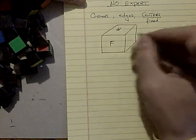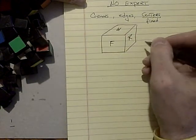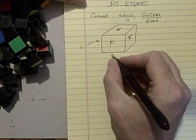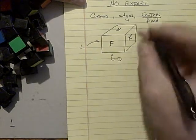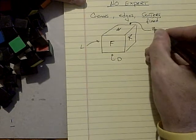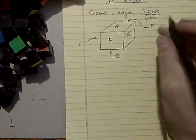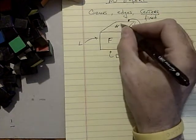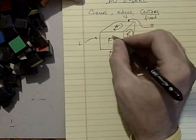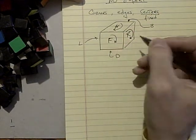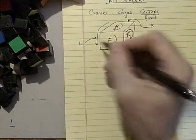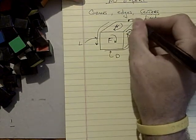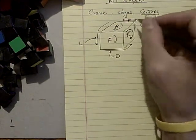Each side is given a letter. F for front, U for up, R for right. On the other side would be L. There's a down side. And out back, there's a back. And each letter stands for a clockwise twist, 90 degrees of that side. So, it would be something like that. And then like this. And it's clockwise when you're viewing the side.